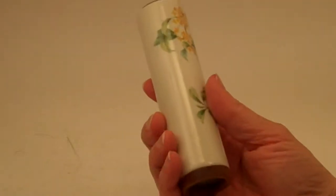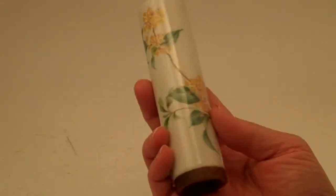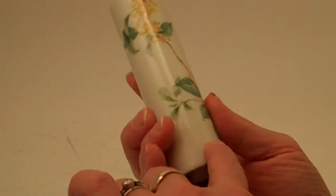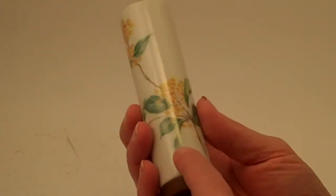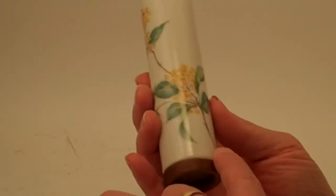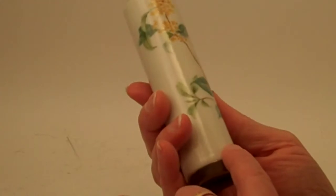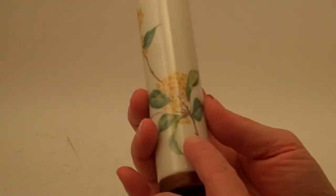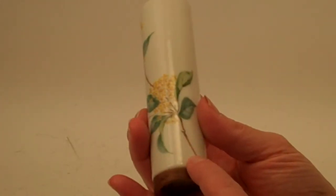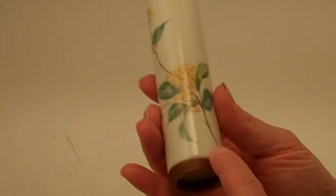Fumi Ino creates lovely kaleidoscopes with a ceramic exterior and a beautiful botanical print. This one is an orange osmanthus, with beautiful delicate flowers painted on the exterior of the ceramic.